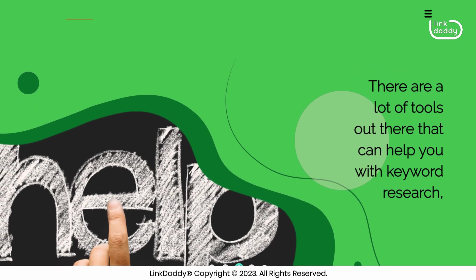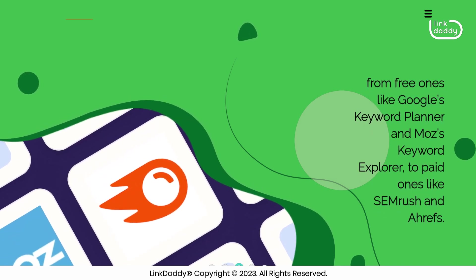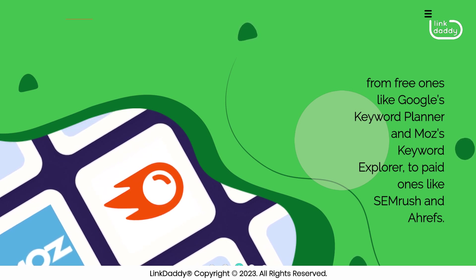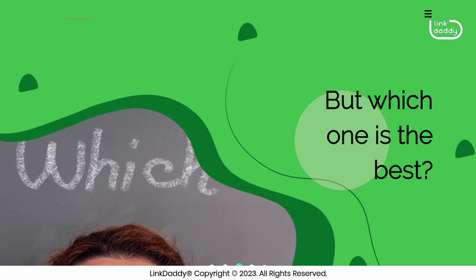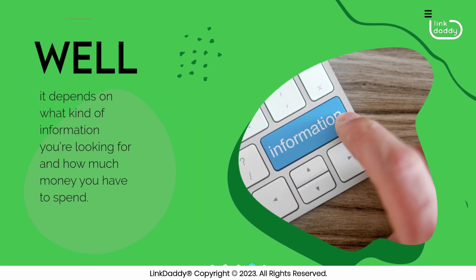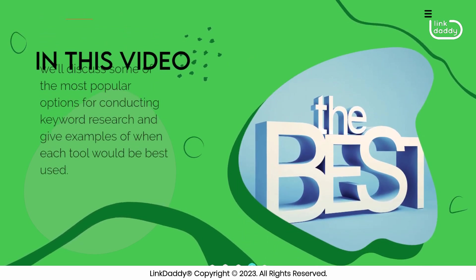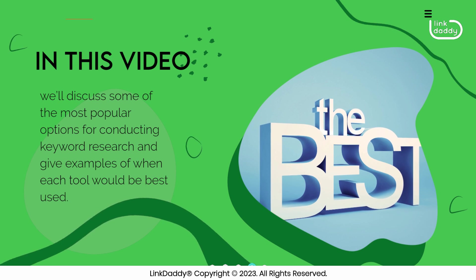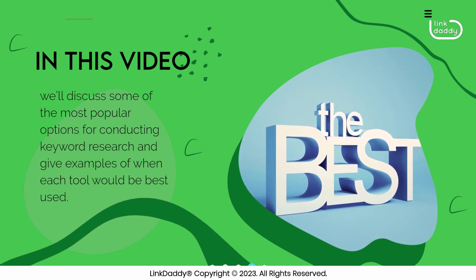There are a lot of tools out there that can help you with keyword research, from free ones like Google's Keyword Planner and Moz's Keyword Explorer, to paid ones like SEMrush and Ahrefs. But which one is the best? Well, it depends on what kind of information you're looking for and how much money you have to spend. In this video, we'll discuss some of the most popular options for conducting keyword research and give examples of when each tool would be best used.